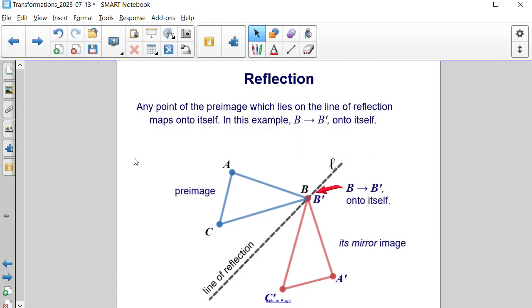Any point of the pre-image which lies on the line of reflection maps onto itself. In this example, point B maps to B prime, which is in exactly the same point. In other words, it maps onto itself.